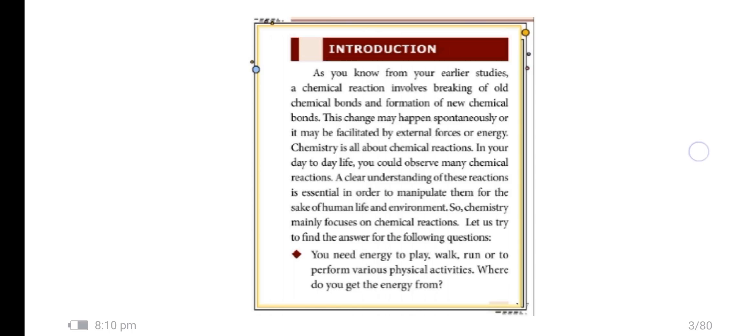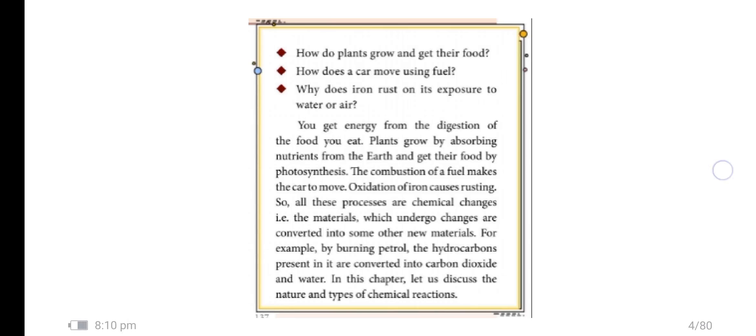You need energy to play, walk, run or to perform various physical activities. Where do you get the energy from? You get energy from the digestion of the food you eat. Plants grow by absorbing nutrients from the earth and get their food by photosynthesis. The combustion of fuel makes the car move. Oxidation of iron causes rusting. So all these processes are chemical changes - the materials which undergo changes are converted into some other new material.